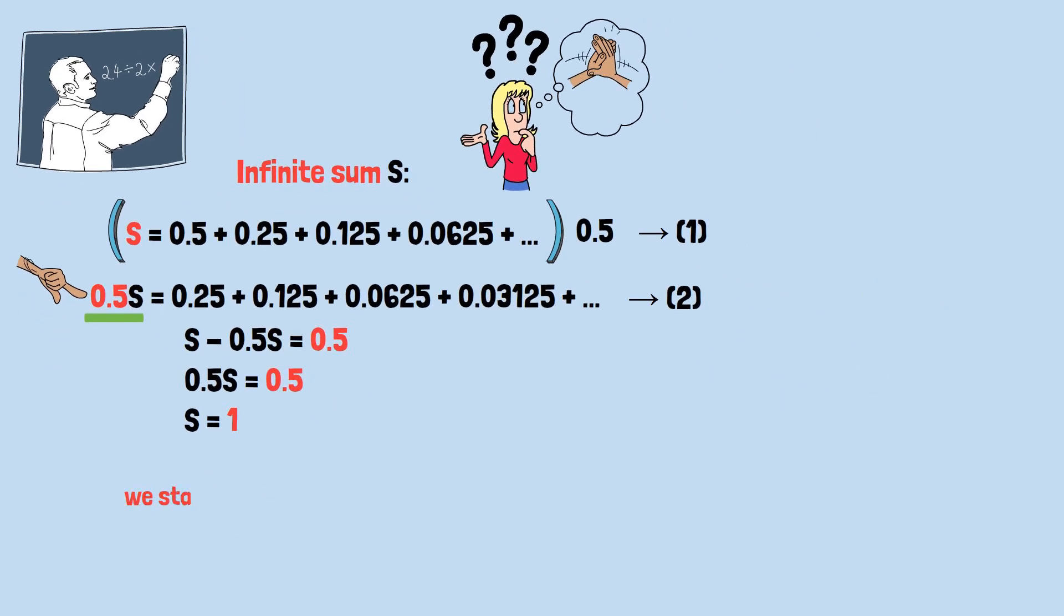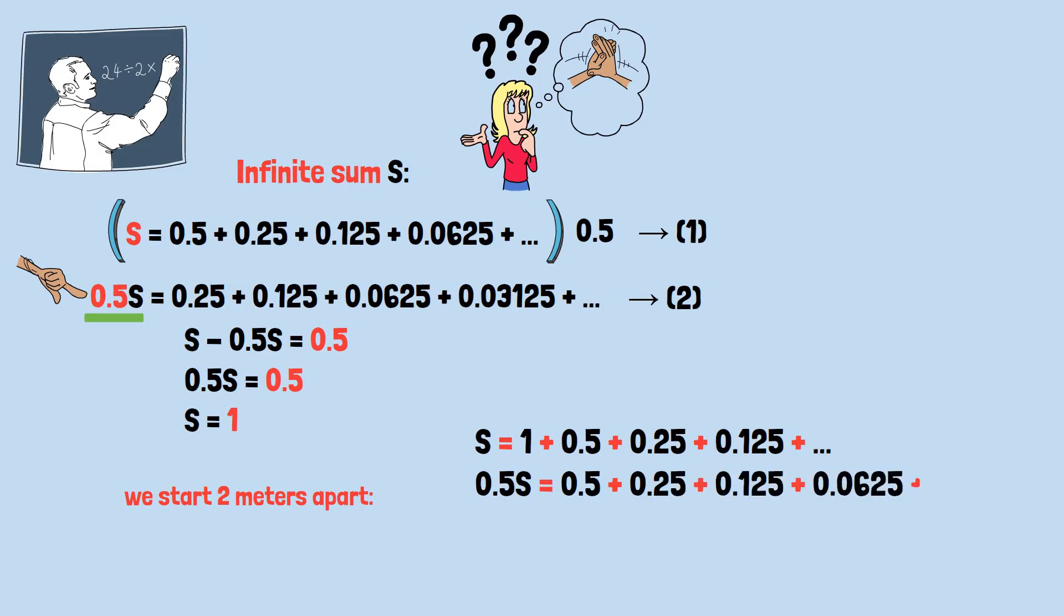Let me recalculate for the specific case where we start two meters apart. S equals 1 plus 0.5 plus 0.25 plus 0.125 and so on. 0.5S equals 0.5 plus 0.25 plus 0.125 plus 0.0625 and so on. Subtracting, S minus 0.5S equals 1, so S equals 2. Perfect! Your hands travel exactly two meters, just as common sense suggests.